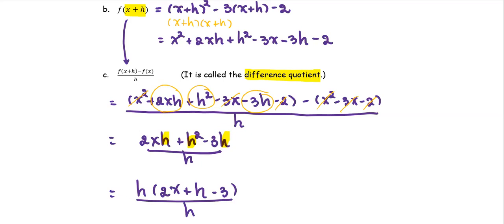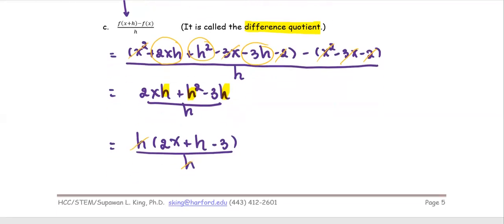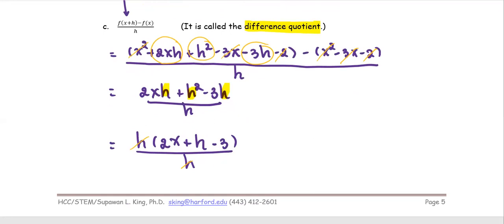And then we can reduce h and h. Finally, the difference quotient is simplified to be 2x plus h minus 3.